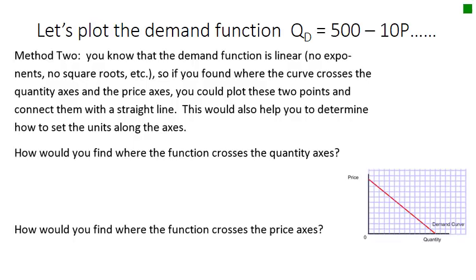Method two: you know that the demand function is linear — there are no exponents, no square roots, nothing to complicate it. So it's similar to y = mx + b. If you find where the curve crosses the quantity axis and the price axis, you can plot these two points and connect them with a straight line. This also helps you determine how to set the units along the axes.